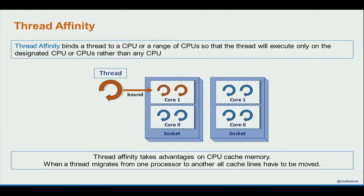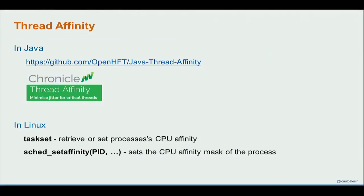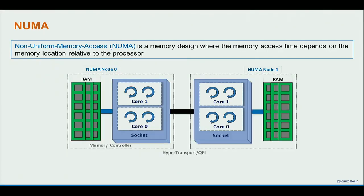OS guidelines: the third level. Thread affinity means binding a thread to one core or multiple cores, ideally on the same socket. Without affinity, when a thread is descheduled there's no guarantee it will be rescheduled on the same core, which invalidates the CPU caches it pre-filled. In Java you can use a dedicated affinity library; in Linux and C++ it's easier using taskset or sched_setaffinity.